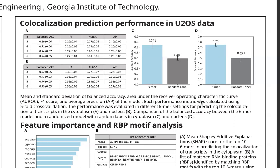This suggests that smaller k-mer size may be insufficient to capture the co-localization signals from the sequence. In addition to balanced accuracy, we also examined other performance metrics such as F1-score, AUROC, and AP. Furthermore, we assessed the robustness of our model by comparing performance with randomized labels. The result shows that randomized labels show performance levels with accuracy scores around 0.5, and similarly in other metrics.